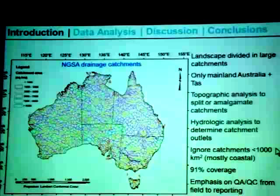Sampling all these catchments would have afforded us a coverage of 91% of the country. The emphasis on the project from conceptualization to reporting was very much on quality control and quality assessment, with a large report dealing with that. If you keep your eye on the catchments here, you will see how our target sites were derived.